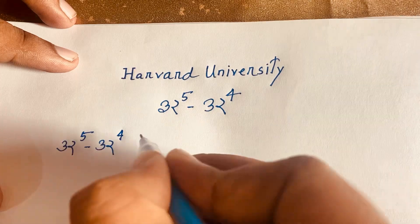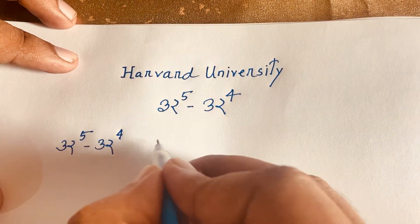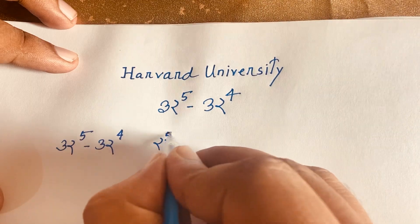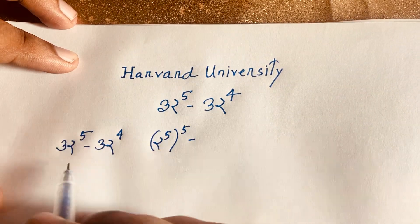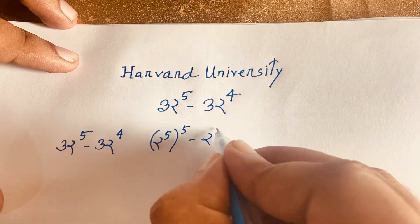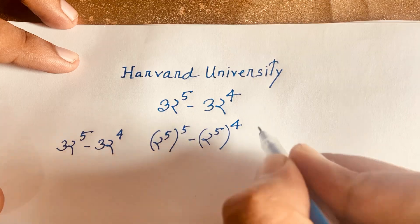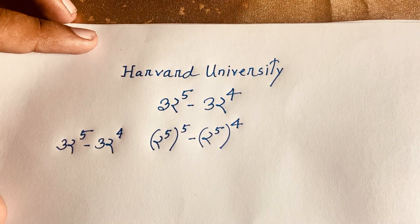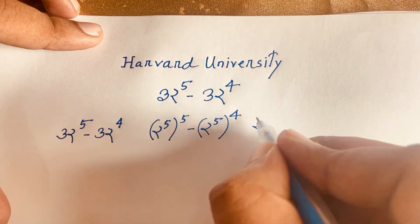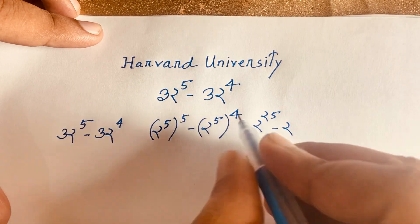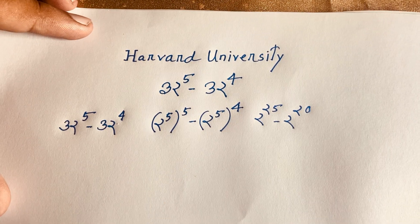Our question is 32 to the power 5 minus 32 to the power 4. We know that 32 equals 2 to the power 5, so we can write this as (2⁵)⁵ minus (2⁵)⁴. Applying the exponent rules, this becomes 2 to the power 25 minus 2 to the power 20.